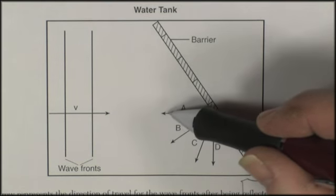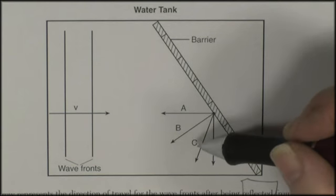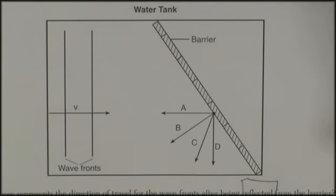and they're going to hit a barrier. Which one of these, A, B, C, or D, represents the reflected waves? Well, this is easy.